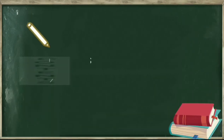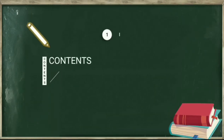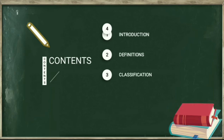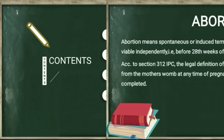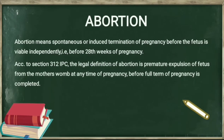The contents of this video are: firstly we will discuss introduction, some definitions, some classification of abortion, and what are the causes of abortion. So, what is abortion? Abortion means spontaneous or induced termination of pregnancy before the fetus is viably independent, that is before 28 weeks of pregnancy.